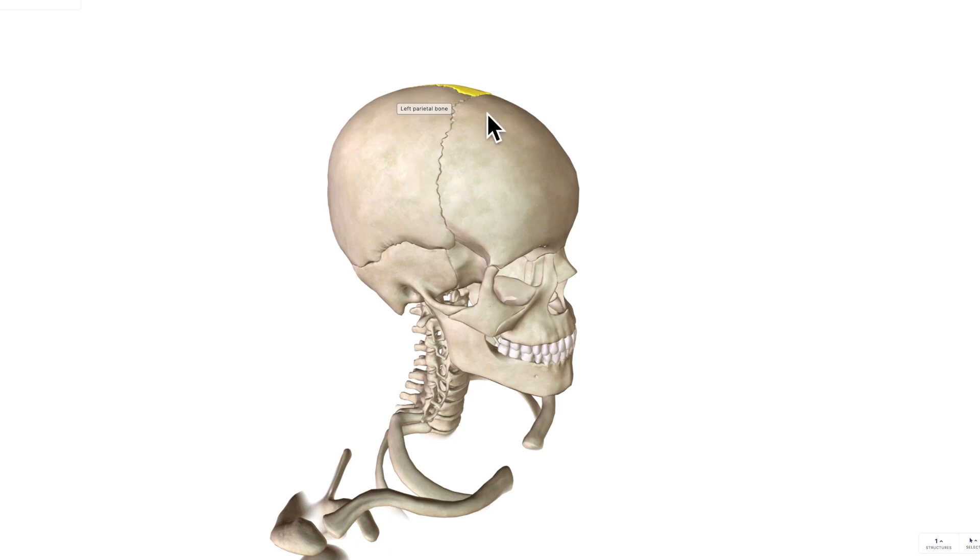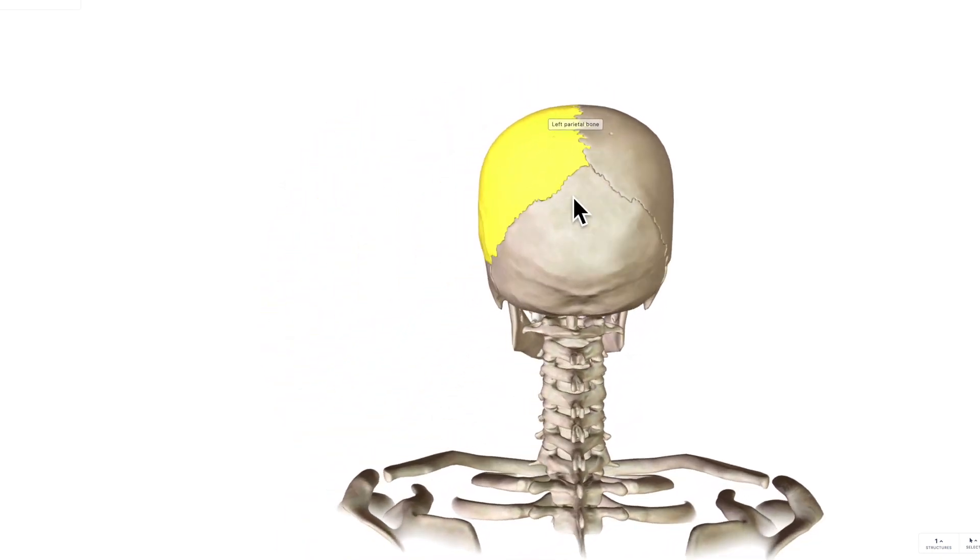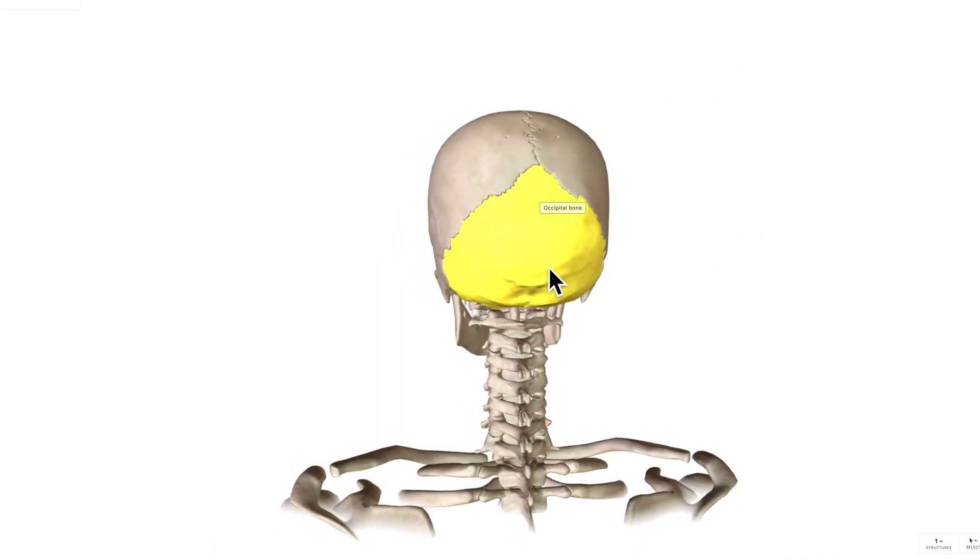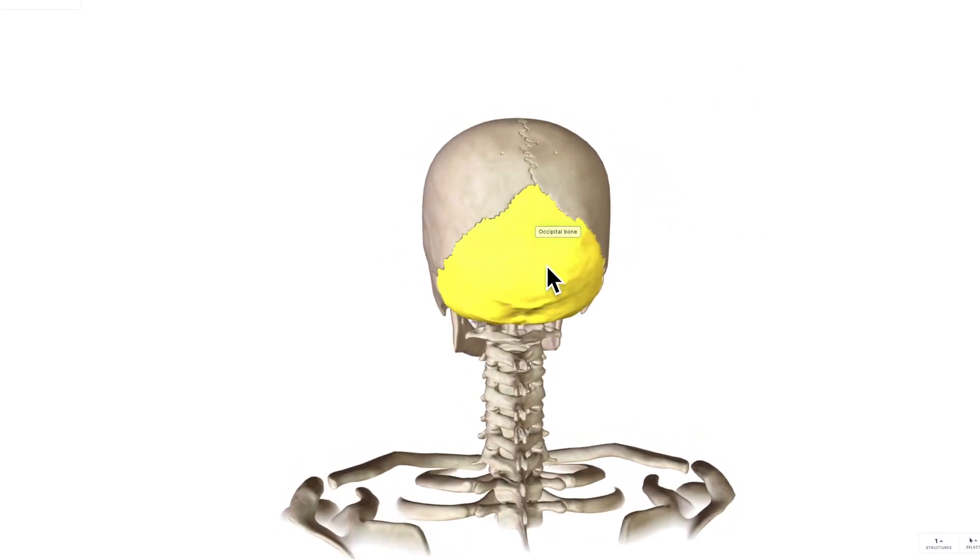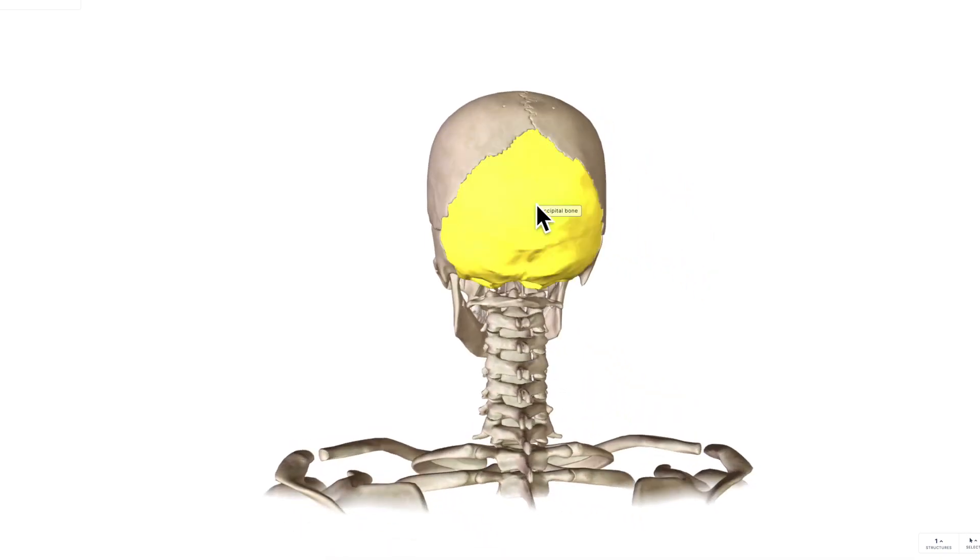If we move more towards the posterior aspect here, we can see another bone that's appearing. Do you know the name of this bone? Okay, so this is going to be the occipital bone. Your occipital bone is at the posterior aspect of the skull. So we've said that these are the parietal bones, these are the frontal bones, these are the occipital bones.